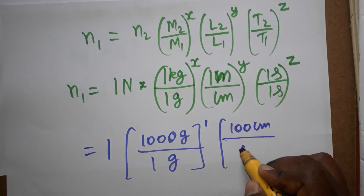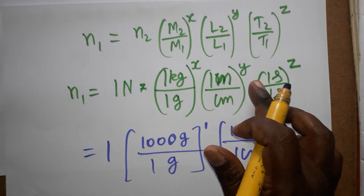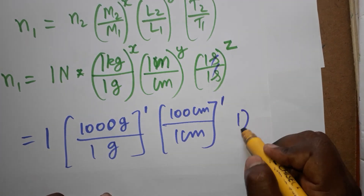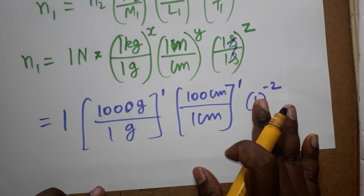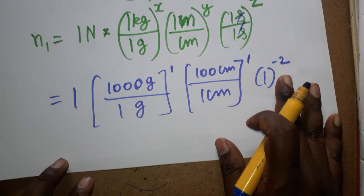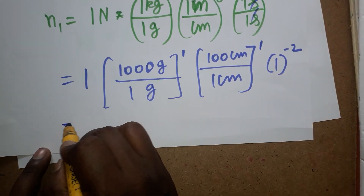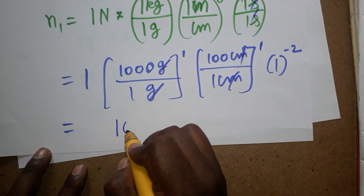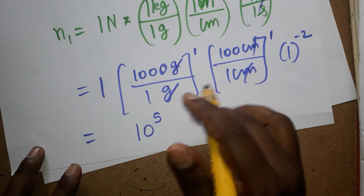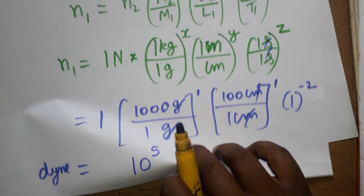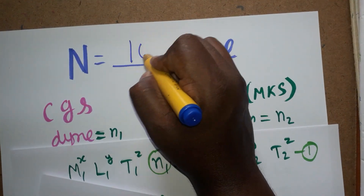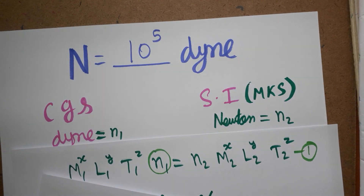Substituting: 1 kg = 1000 gram, so we get 1000 gram/1 gram = 1000. 1 meter = 100 centimeter, so 100 cm/1 cm = 100. The seconds cancel out, giving 1 to the power −2 = 1. Multiplying: 1000 × 100 = 100,000 = 10⁵. Therefore, 1 Newton equals 10⁵ Dyne. Thank you for watching — please subscribe!